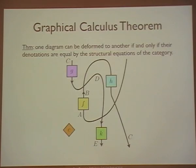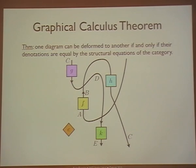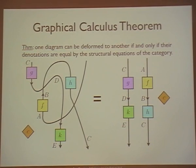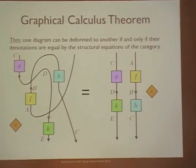Putting all these facts together, I get something which I'll call the graphical calculus theorem — which is actually about three or four different theorems by different people in different decades. It simply says that whenever I can deform one diagram into another, those diagrams are equal in the theory of dagger compact categories. That was the revision — is everything clear?